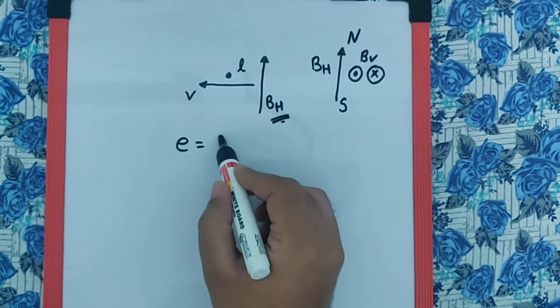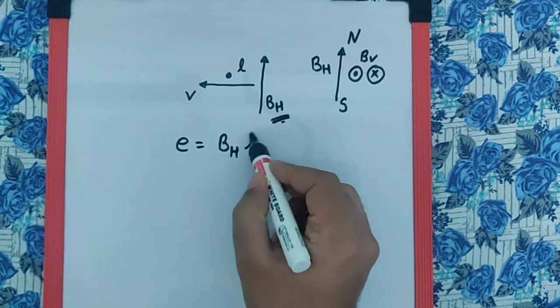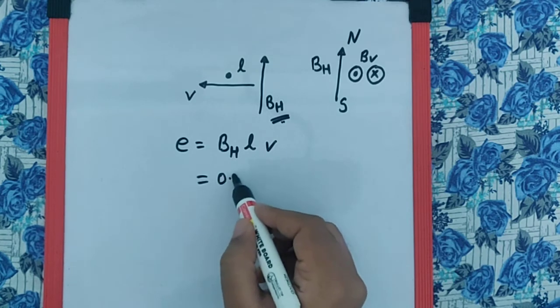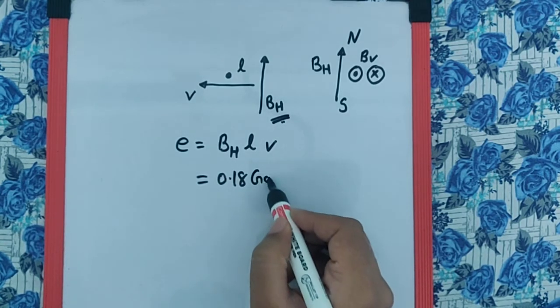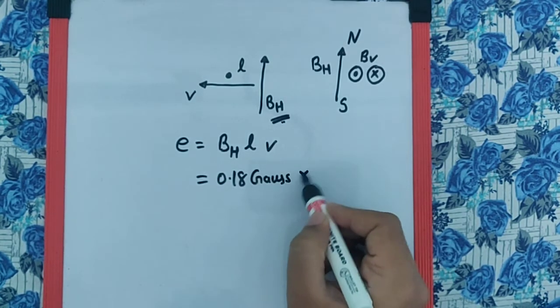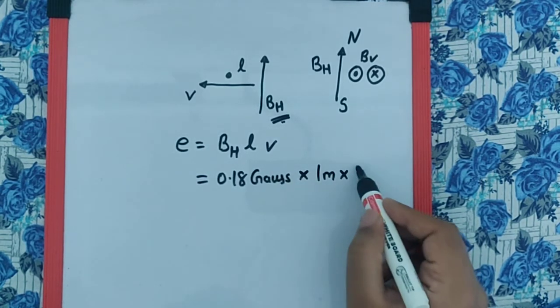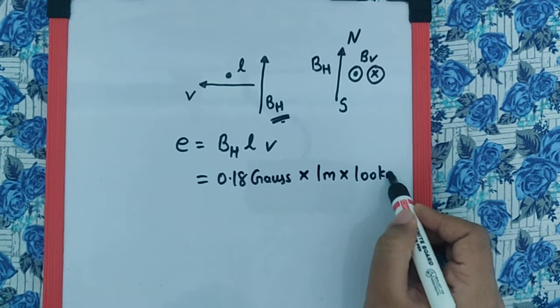And therefore the EMF is going to be BH into L into V. Now BH is given as 0.18 gauss, the length is given as 1 meter, and the velocity is 100 kilometers per hour.